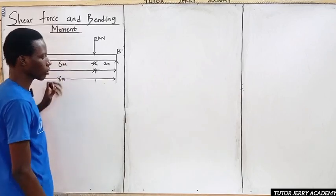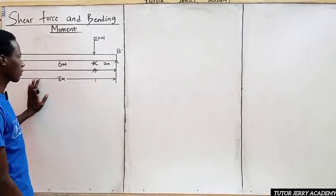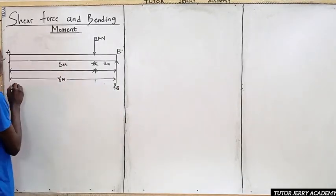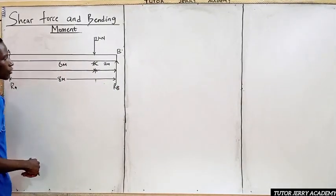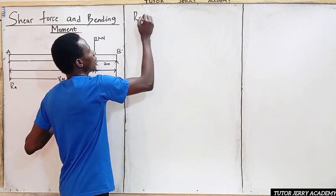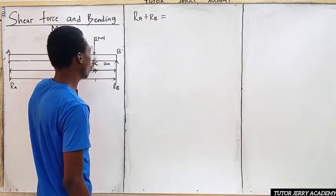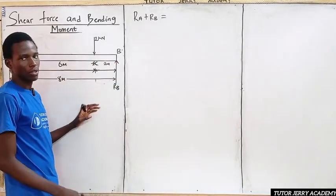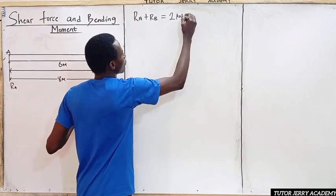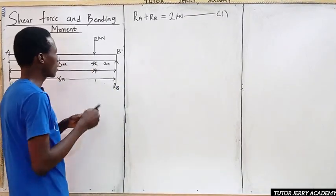The first thing we are going to do is equate the sum of the upward forces with the sum of the downward forces. We have reactions Ra and Rb. So the sum of upward forces Ra plus Rb equals the sum of downward forces, which is 2 kilonewtons. We will call this Equation 1.